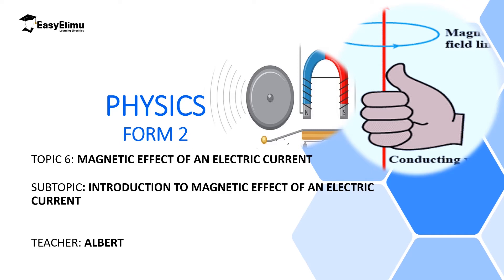One of the most important methods of magnetizing materials that we discussed is using electric current by inserting a magnetic material inside a solenoid, which carries direct current, and in that process, the material got magnetized.